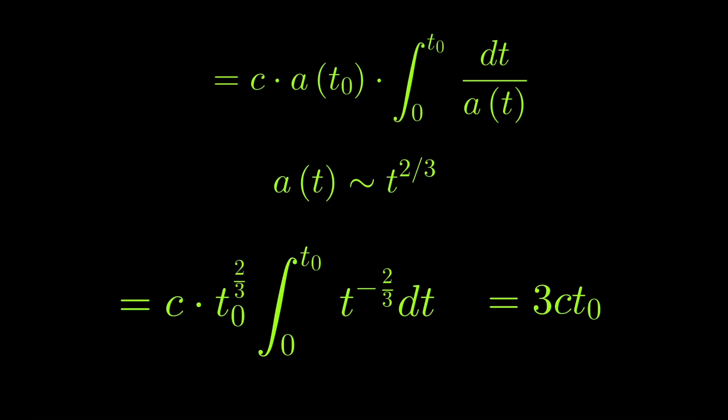And, as you can see, this integral has a quite simple solution because you only have to integrate the polynomial t to the power of minus 2/3 and then you get 3 times c times t₀. So, t₀ is the age of the universe. So, 14 billion years, roughly. c is the speed of light. So, c times t₀ is 3 times 14 billion light years. And this is 42 billion light years.